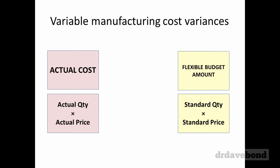Looking at those two boxes, there are two variables in each — quantity and price — and they're both different: one is actual, one is standard. To compare actual cost to the flexible budget amount, the variance could be driven by a quantity difference or a price difference. So in the middle we set up a number to disentangle what's causing the overall variance. We keep price the same as the flexible budget — standard price — and use actual quantity from the actual cost side. Moving from flexible budget to the middle varies only quantity; moving from the middle to actual varies only price.